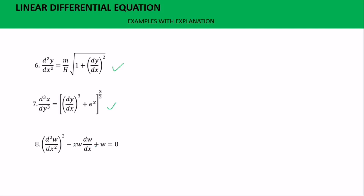Example seven is non-linear for two reasons. First, the degree is three — for a linear differential equation the degree must be one, but here the degree is three. Second, u is the dependent variable and s is the independent variable, and u is multiplying the derivative, which also makes this a non-linear differential equation.